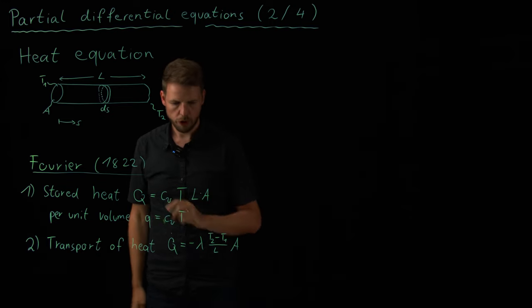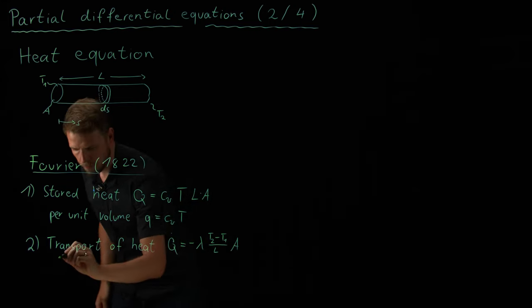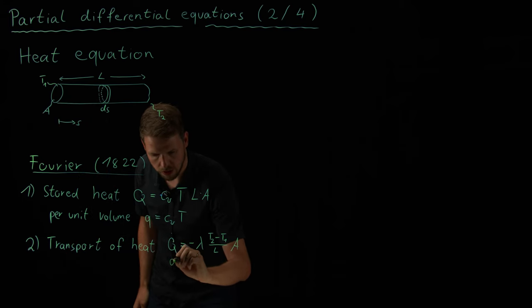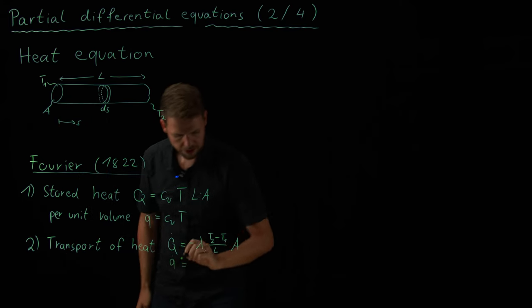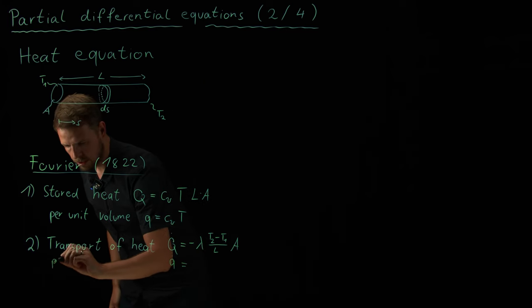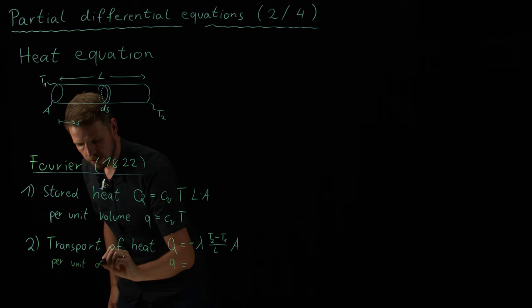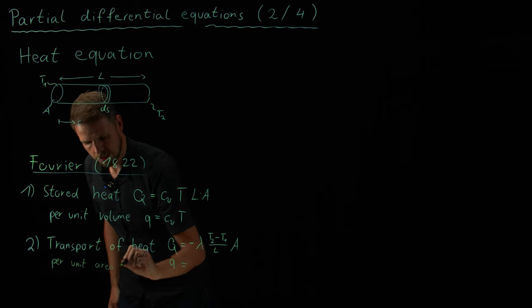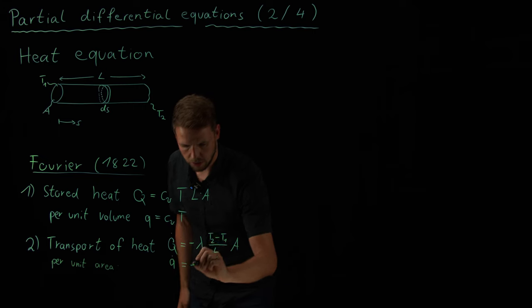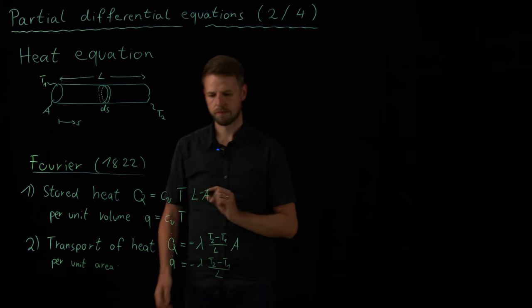All right? And so again, we have per unit volume, the little q, and per unit area, q dot is the same just per unit area. We get q dot, which is minus lambda times T2 minus T1 over L. Okay.